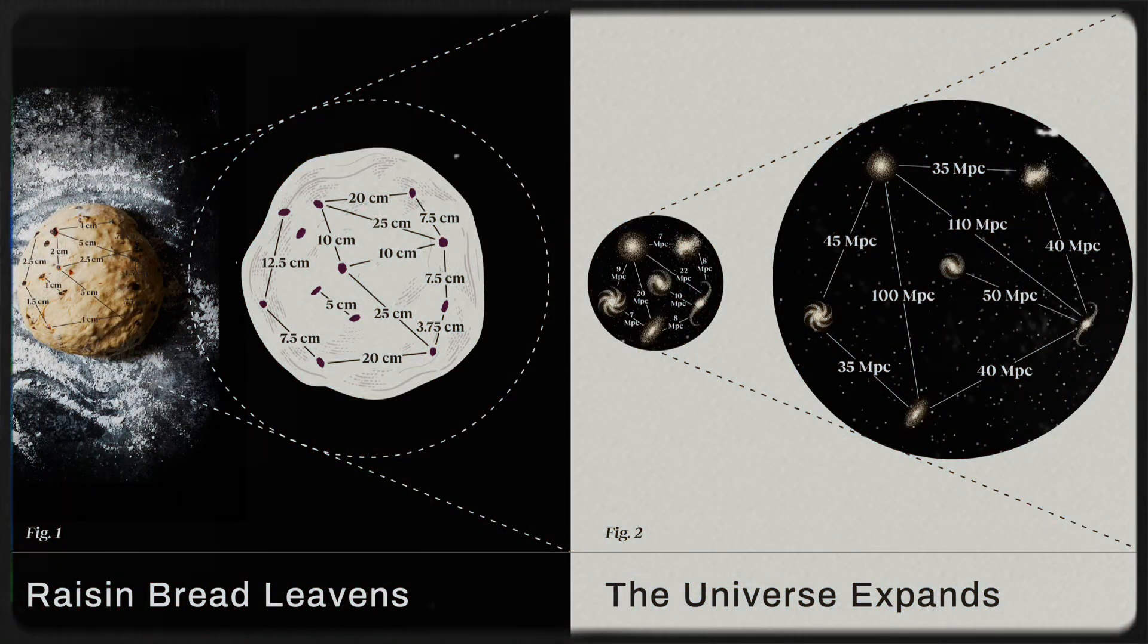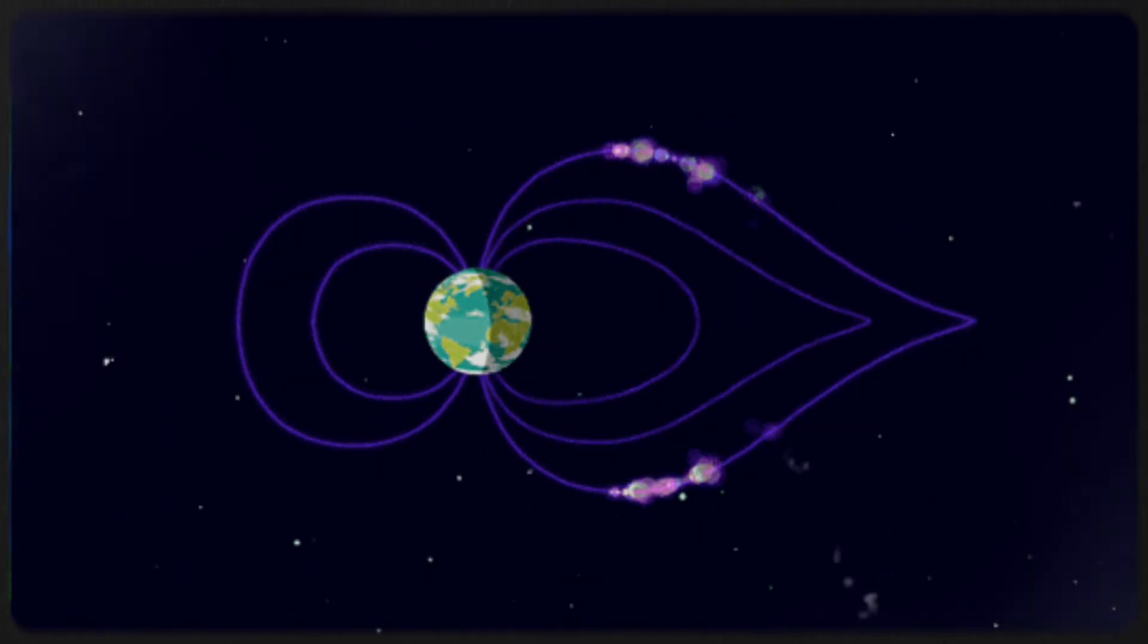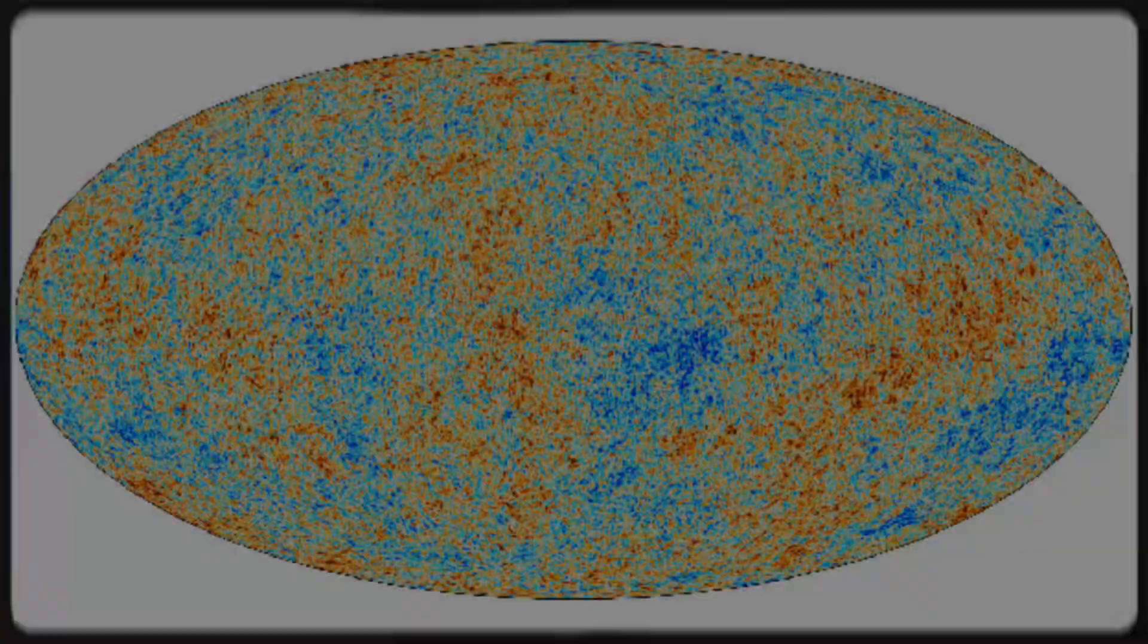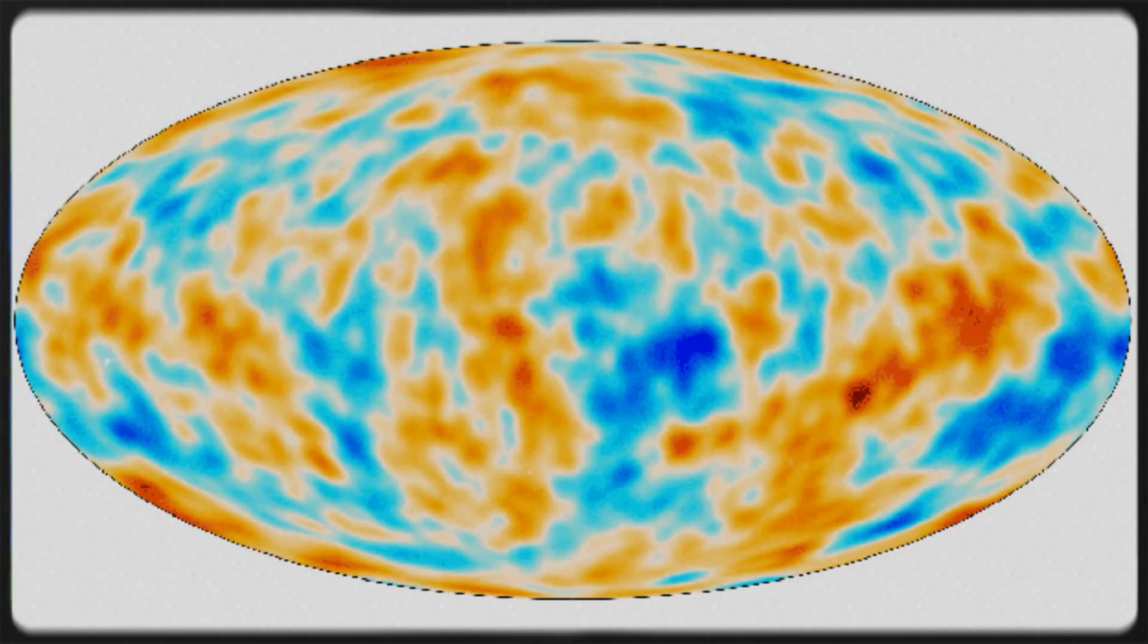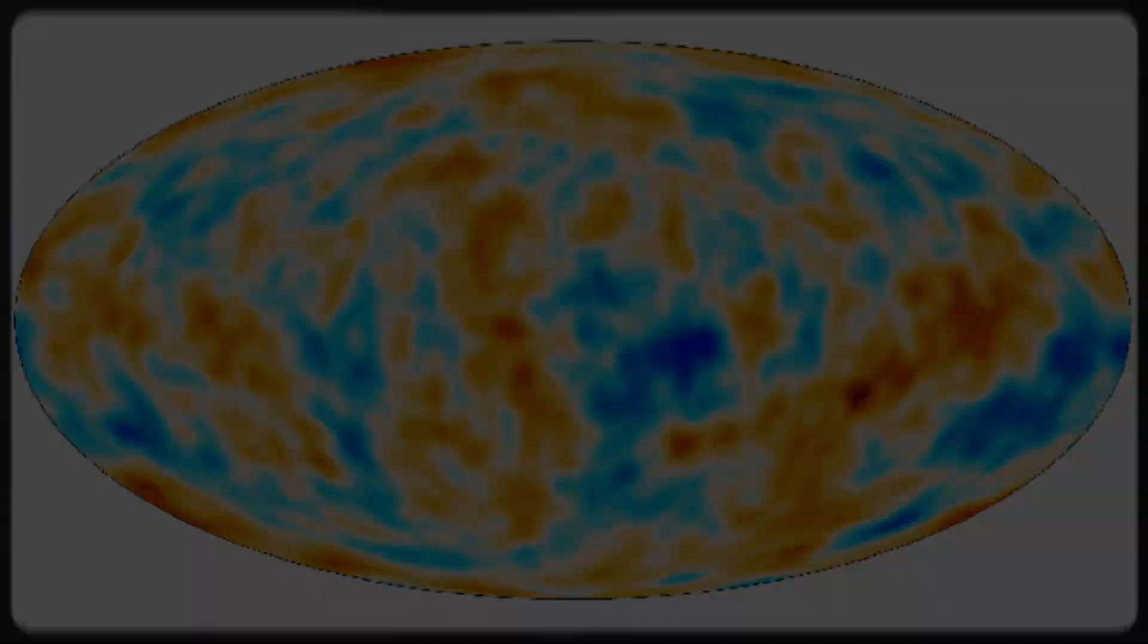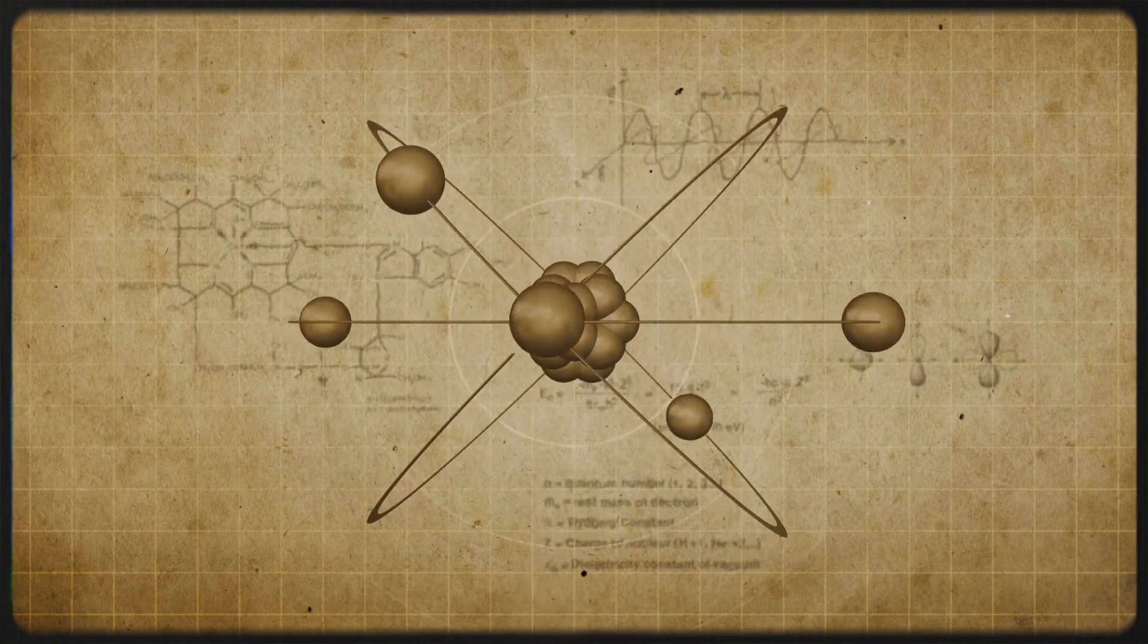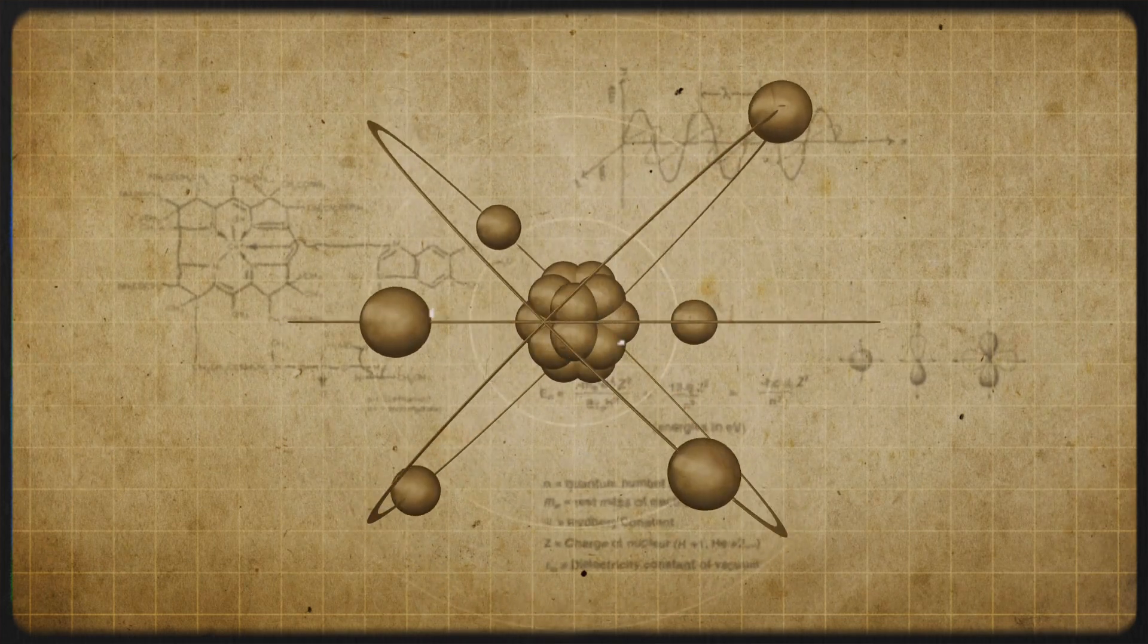The Hubble tension stands out because it connects to so many cosmic mysteries. Gravitational waves offer a new lens on the problem. Inflation theories challenge our grasp of the universe's birth, and strange patterns in the CMB hint that something deeper is at play. All these clues weave together, pointing to the possibility that new physics might be waiting just beyond the horizon.